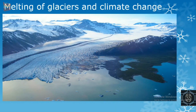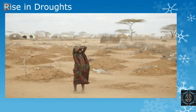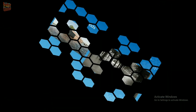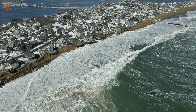Now we will study about the effects of global warming. First is melting of glaciers and climate change. Due to global warming, glaciers are melting and sea levels will rise, which will lead to floods and endanger human life. More global warming leads to more evaporation and more rain, and animals and plants cannot adapt to this increased rainfall. Next is rising droughts — with the increase in temperature, droughts have increased and whole forests have begun to disappear. Next is rising floods — due to global warming, there is an increase in floods, disturbing the balance of our ecosystem.